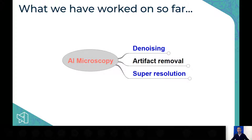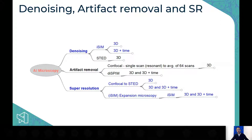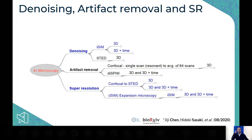I'll talk about three types of restoration: denoising, artifact removal, and super resolution. The items highlighted in blue are part of the 3D ARCAN paper available on BioArchive — just search for '3D ARCAN.' The first authors are Hideki, Gigi, and Hoya, with a fourth first author, and the last author is Harish Shirov. All the blue items will be described briefly in this presentation; the others are not yet ready for sharing.